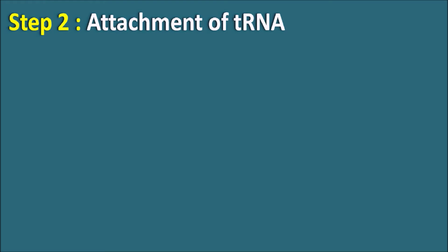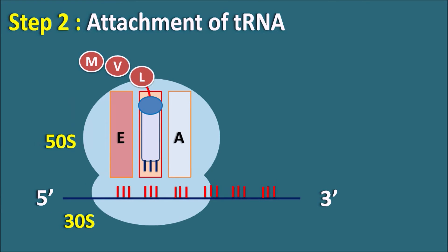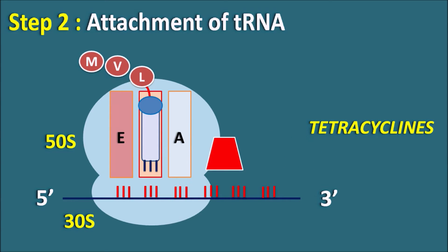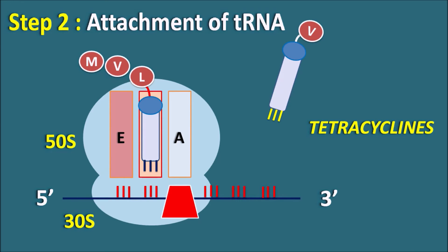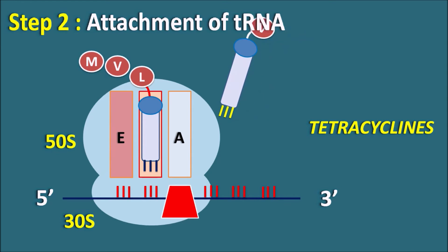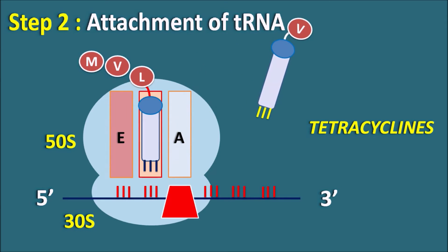Step two is the attachment of tRNA. At the 50S subunit, tRNA brings the new amino acid to the ribosome. Here, the drug category tetracyclines binds to the 30S subunit — the smaller subunit of the bacterial ribosome — thereby preventing the attachment of tRNA. Whenever new tRNA is ready for attachment at the A site, tetracyclines inhibit it from attaching, thus inhibiting this important step in protein synthesis.